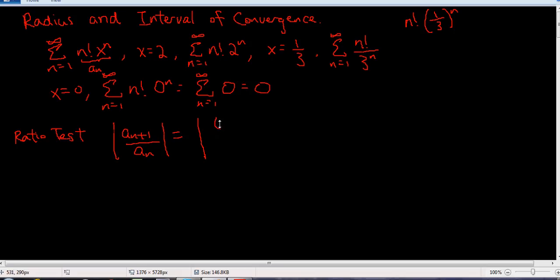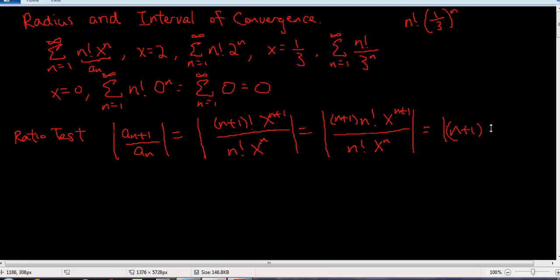All right, so it's n plus 1 factorial. Whatever I see for n in a n up there, I just put an n plus 1. x to the n plus 1. And on the bottom, we just keep it exactly the same. n factorial x to the n. All right, some of these things will cancel. And in fact, this is n plus 1 factorial times n factorial x to the n plus 1. Oh, shoot. Nope. Sorry. It's just n. Hang on.